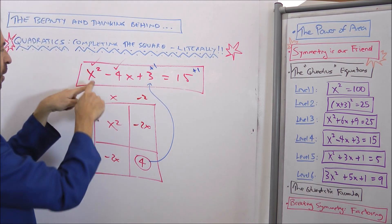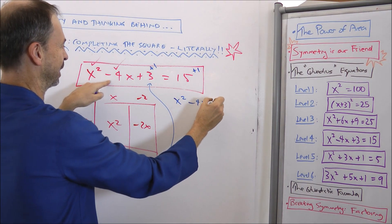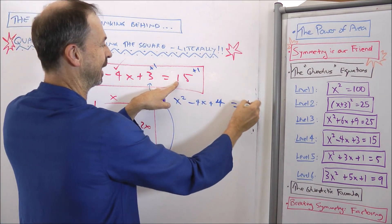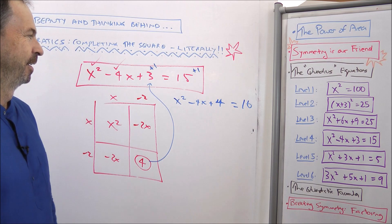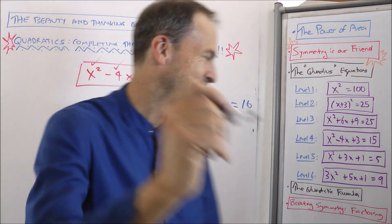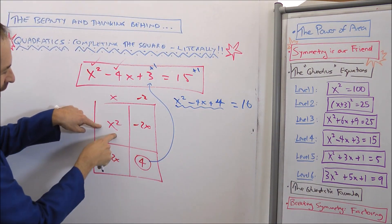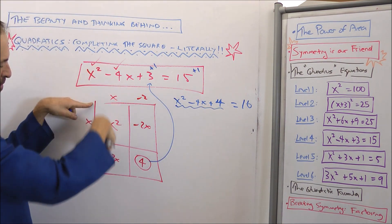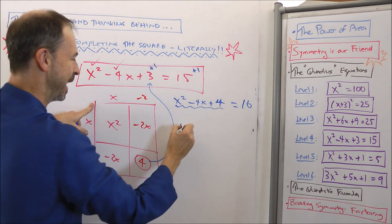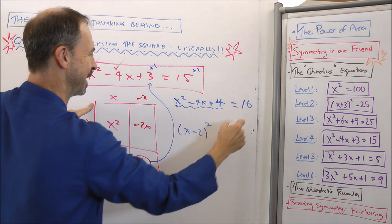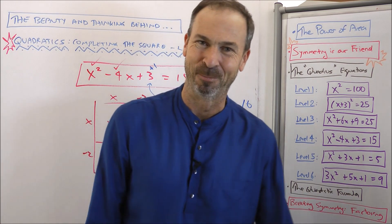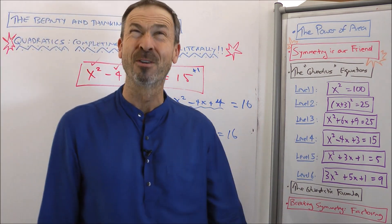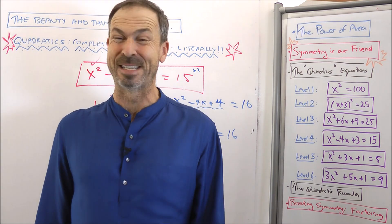So that means I'm really going to have the equation x squared minus 4x plus 4, which is what I wanted, now equals 16 — 15 plus 1. But now I'm good. Because all this is precisely this square. x squared minus 4x plus 4 is x minus 2 times x minus 2 as a square. x minus 2 squared is 16, and I'm back to level 2. So x minus 2 must be 4 or negative 4, so x must be 6 or negative 2.